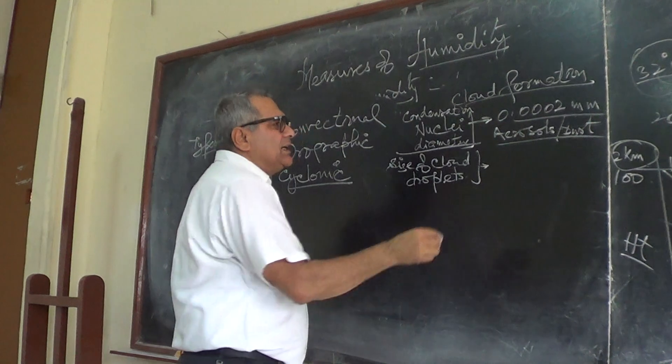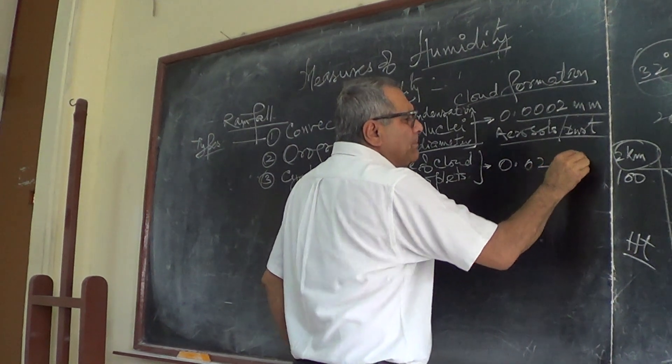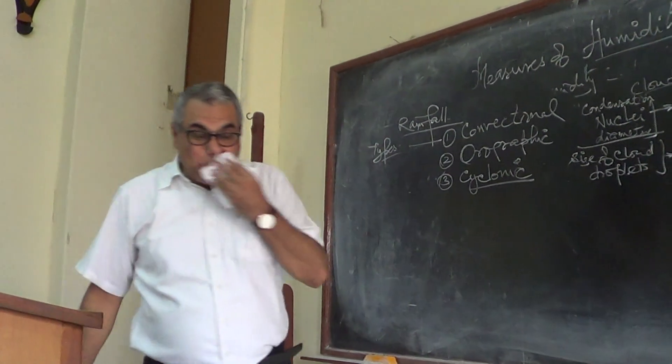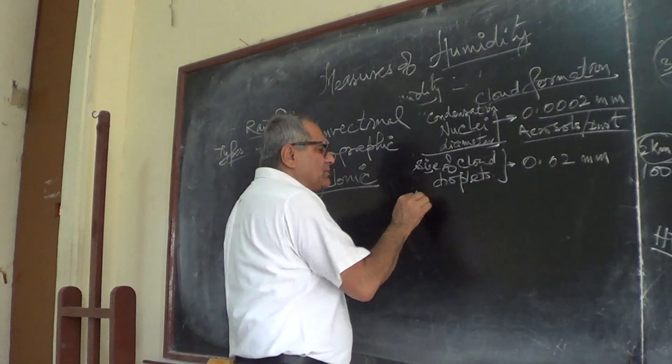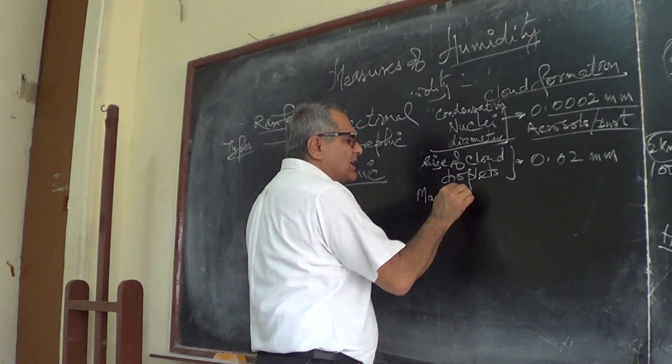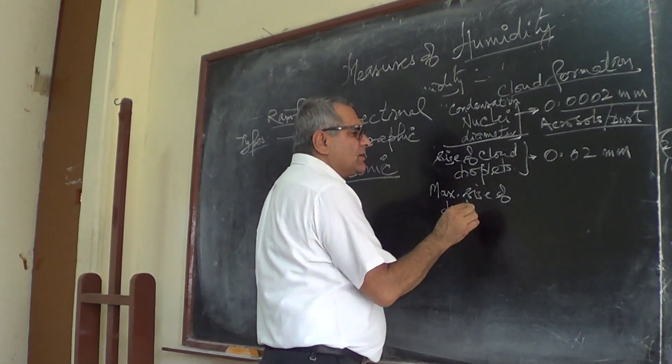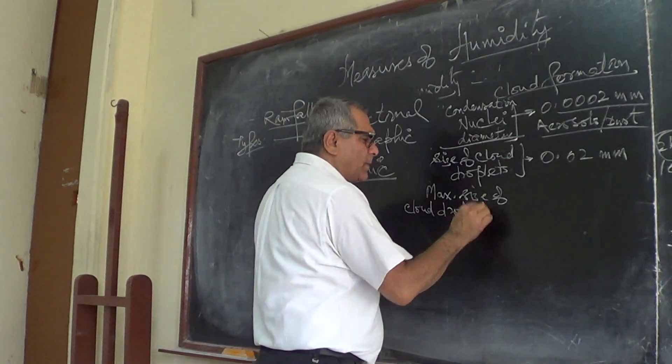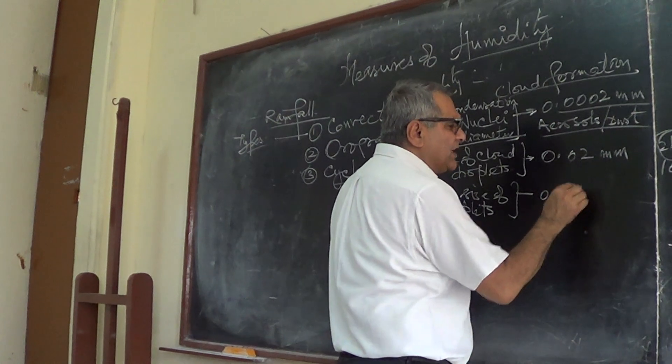Size of cloud droplets. So droplet forms. Its size is 0.02 mm at the time of the formation. And the maximum size, this is maximum size of droplet, cloud droplets, it is 0.05 mm.